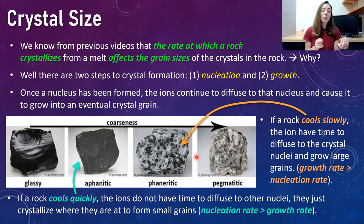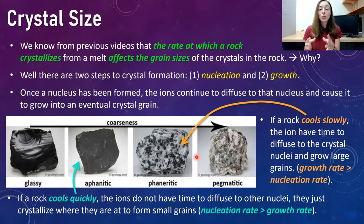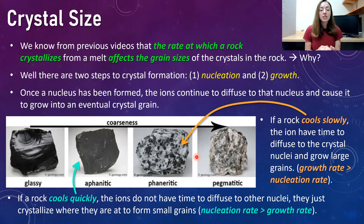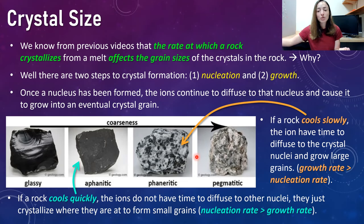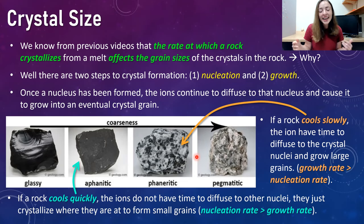However, if you have a rock that cools very quickly, the ions do not have time to diffuse to other nuclei, and so they just crystallize where they are to form very small grains, because nucleation rate is greater than growth rate in that scenario. You'll get a texture that's very fine-grained called aphanitic. You can imagine something that erupts and is extrusive or volcanic — those ions are just going to sit where they are and nucleate and become their own little grain, because they don't have time to diffuse over to some other nuclei. So it's very fine-grained with a lot more grains overall, and that's called aphanitic. We see this in a lot of basalt.